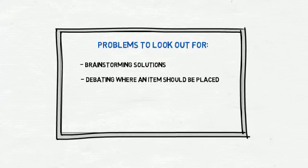Number 2: Debating where an item should be placed on the fishbone. For example, arguing whether the item should be in people, not process. To solve this, put the item in both spots and move on. You will evaluate later.